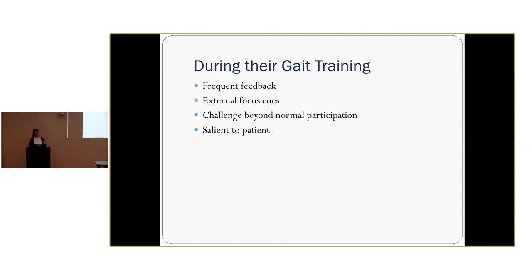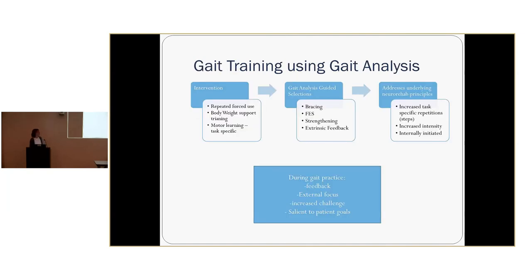By using these interventions and getting them walking as well as possible, you're working on task-specific repetition, increasing their intensity, and increasing their internally initiated cues to self-correct during the gait pattern. By making good selections based on the impairments you've seen in gait observation, you'll be able to improve repetition, intensity, and internal initiation. During their gait training, you can work on the other principles of neural rehab — giving frequent feedback about performance, giving external focus cues, challenging them beyond normal participation, and making sure it's important to the patient.